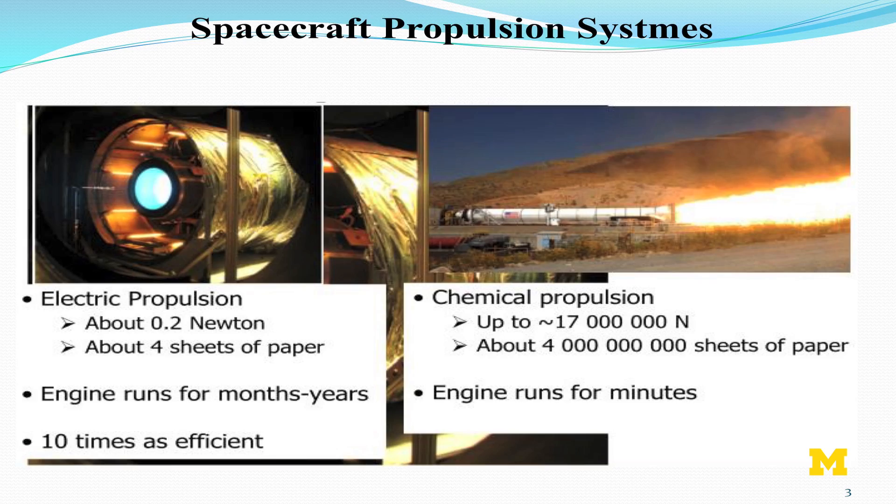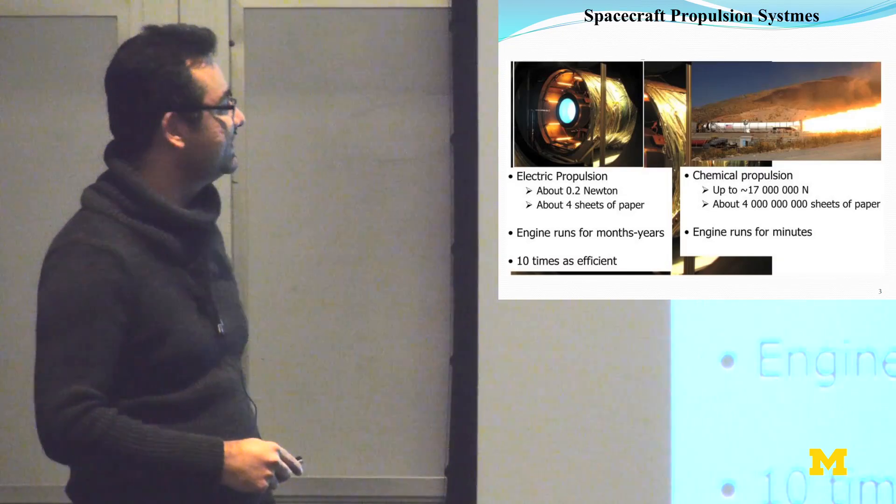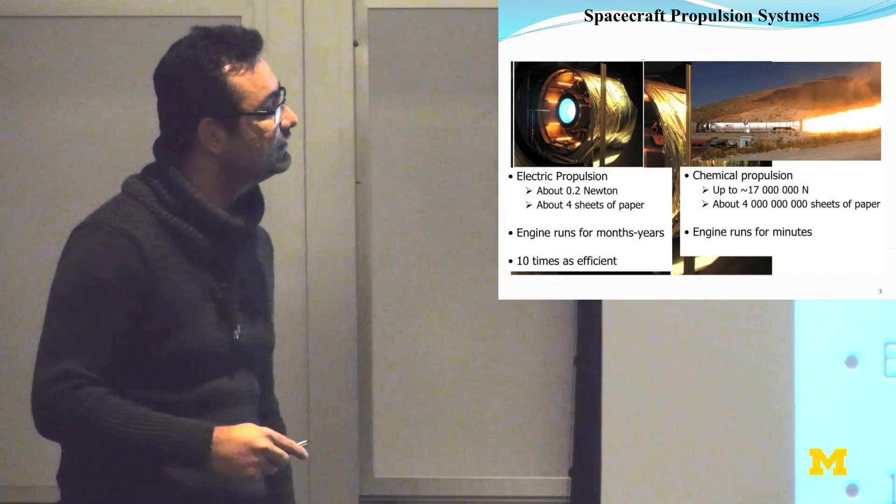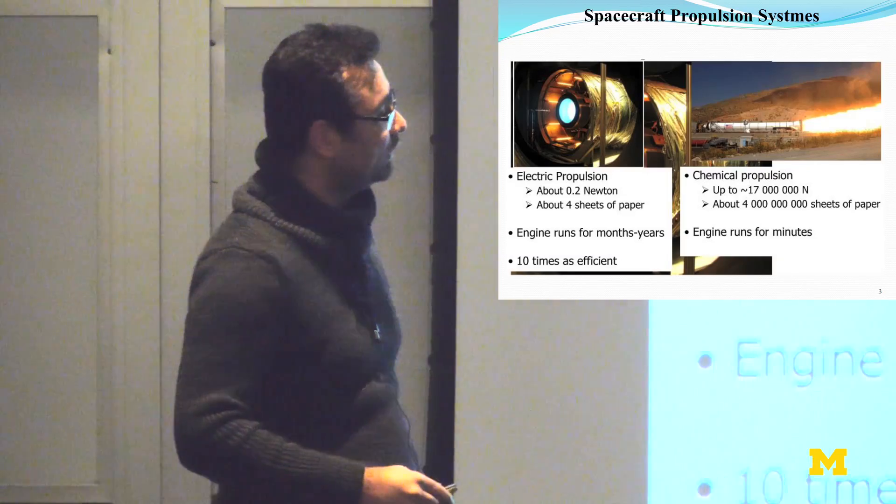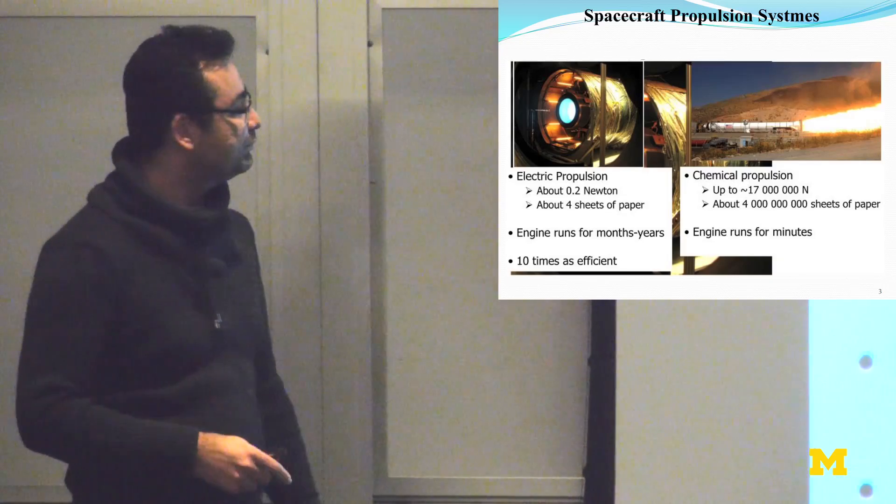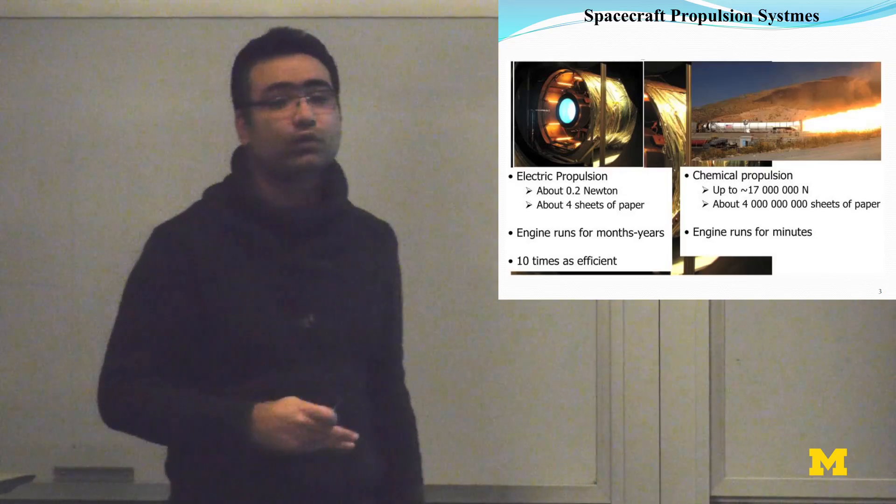If you look at this picture on the left, you will see a typical electrical propulsion, which shows the amount of force created by expelling charged particles out of the engine. You can see it's a very small value of force. By comparison, it was mentioned that it's equivalent to four sheets of paper. On the right, we have the chemical propulsion, which creates an enormous amount of force, but in a very low amount of time. It's on the order of minutes, but for the electrical engines, you will see that they can run for months or even years.